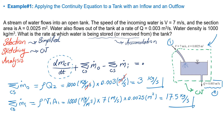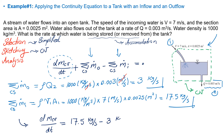Now I'm going to take these two values and put them into the continuity equation to find accumulation. dm_cv/dt equals 17.5 kg/s minus 3 kg/s. The final answer: the amount of accumulation is 14.5 kg/s.